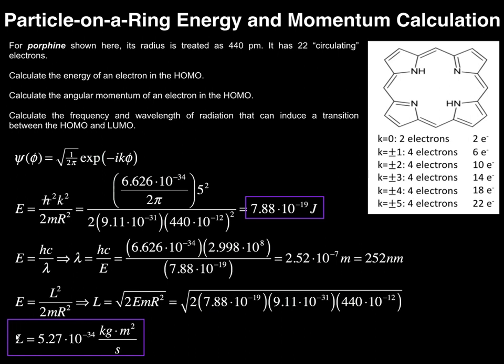This is the momentum of this particle moving around the ring. This is how you can use the energy eigenvalue and its expression from the Schrodinger equation to calculate the energy of an electron. You can use it to calculate the wavelength or frequency of light needed to promote an electron from the HOMO to the LUMO and also calculate the momentum of that electron. If you're given the magnetic number K, you don't need to determine it. But anytime you're not given K and asked to calculate the energy of an electron in the HOMO, you need to do this. Remember that K equals zero only corresponds to two electrons, whereas all the others are four. You just add up until you get to your number of electrons.